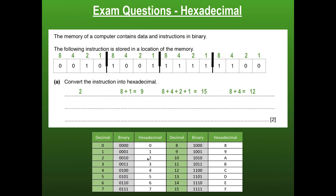So we write down the hexadecimal equivalents: 2 is 2, 9 is 9, 15 is F, and 12 is C. The answer to this question is 29FC.